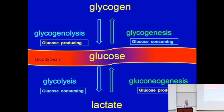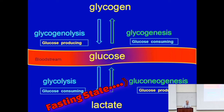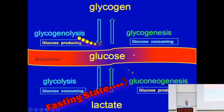A second glucose-producing pathway is called gluconeogenesis, which simply means the de novo synthesis of glucose from smaller precursor molecules. So one source of glucose is the breakdown of glycogen, and the other is new glucose synthesis from smaller molecules. Both of these contribute to restoring blood glucose to its normal levels.